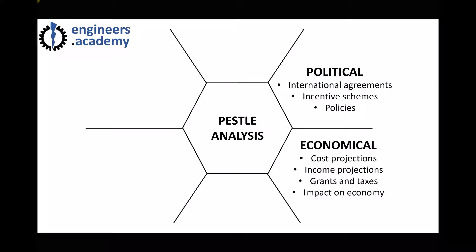The E in PESL stands for economical or economic factors. This might include things such as cost projections and income projections. You might consider different grants available for your project, or different taxes that may impact on its development. More generally, you might consider the impact your project is going to have on the economy — whether it's going to create jobs or impact the economy in other ways.